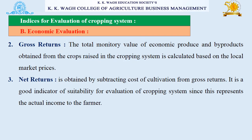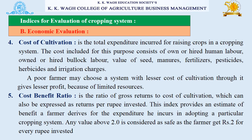The next index under economic evaluation is gross returns — the total monetary value of economic produce and byproducts obtained from the crops raised in the cropping system, calculated based on local market prices. Net returns are obtained by subtracting the cost of cultivation from gross returns. Cost of cultivation is the total expenditure incurred for raising crops in a cropping system. Finally, the cost-benefit ratio is the ratio of gross returns to cost of cultivation, which can also be expressed as returns per rupee invested.